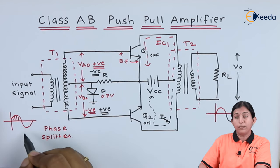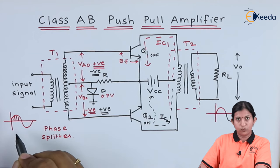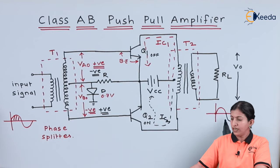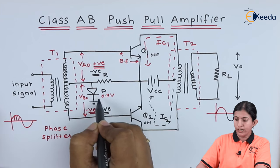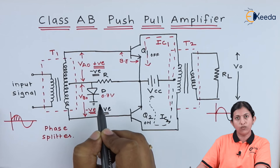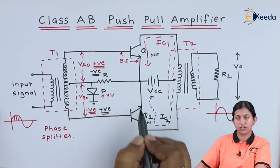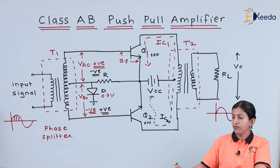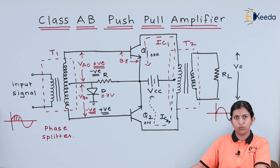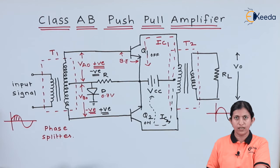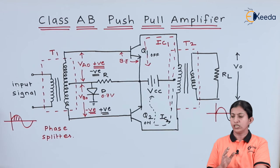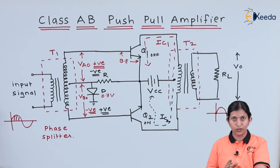When we apply the complete input to the class AB push-pull amplifier, we get the complete output. Since we are applying 0.7 volts, which is equal to the cut-in voltage of both transistors Q1 and Q2, we get the entire cycle of the input signal at the output side. The advantage of the class AB push-pull amplifier is that it eliminates crossover distortion. So this is all about the class AB push-pull amplifier.